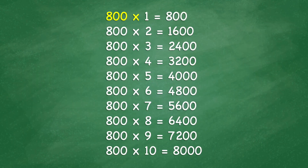800 times 1 equals 800. 800 times 2 equals 1,600. 800 times 3 equals 2,400.